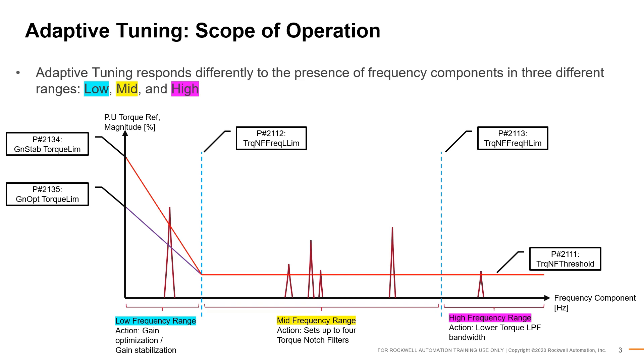In the mid frequency range, the available action is the automatic setting of four notch filters on the torque reference path. A system's characteristic resonances are excited by specific frequencies in the reference signal. A properly configured notch filter removes such excitation components and only such components. This eliminates the resonance excitation, allowing the machine to operate much more efficiently.